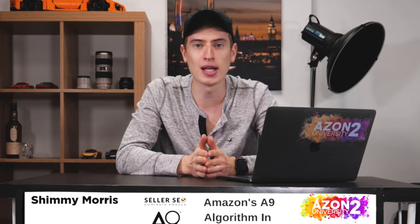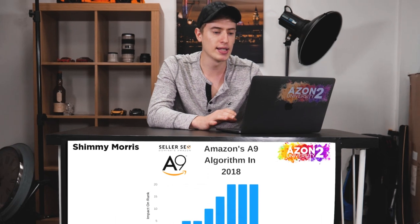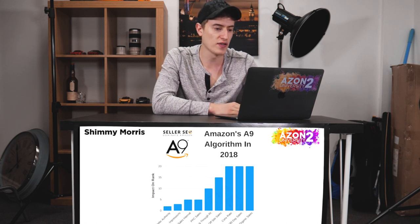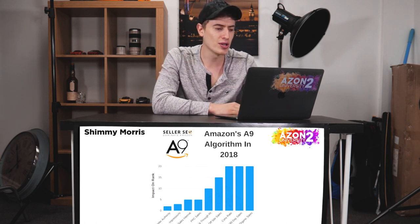Seller authority is where you stand as a seller on Amazon — your performance scores, your seller reviews, and how long you've been selling. Basically, what is your authority in the Amazon network? If you're brand new it's harder, but looking at the chart, the three biggest factors are conversion rate, 180-day sales, and organic sales, so seller authority isn't such a big deal comparatively.